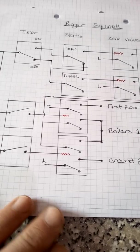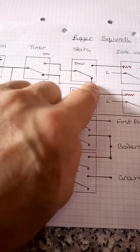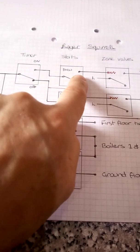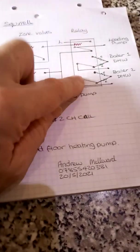So hot water side. So if we get a call for hot water, we have to be on here, we have to get a call here. Then that will energize this zone valve, latch that relay, latch these three relays.